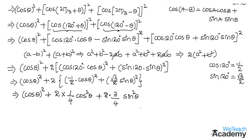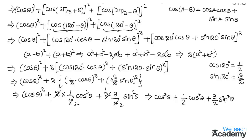Now simplifying: 2 times 1/4 gives 1/2, and 2 times 3/4 gives 3/2. So we get cos²θ + (1/2)cos²θ + (3/2)sin²θ. Taking cos²θ as a common factor from the first two terms, we get cos²θ(1 + 1/2).